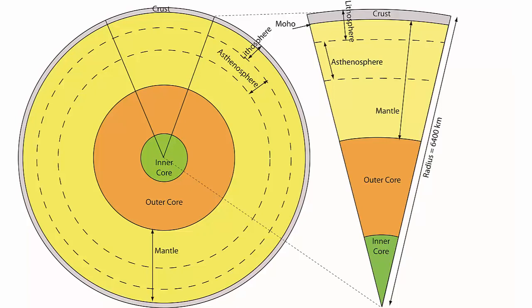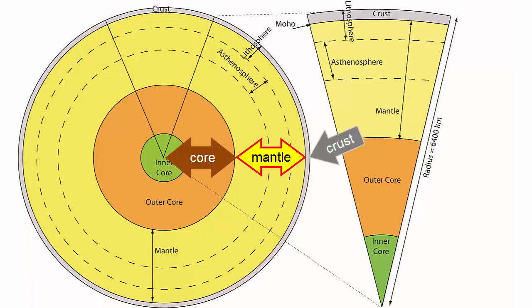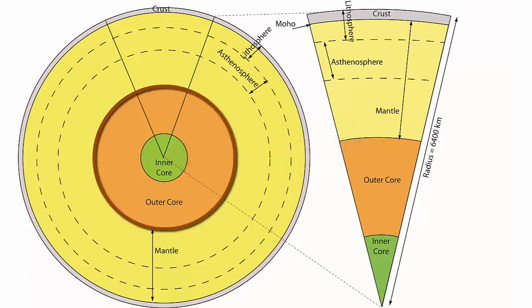Let's review the basics. First, due to density separation, the core, mantle, and crust — the primary compositional layers — were formed. Let's look closer at the core. It's made mostly of iron, and is separated into two physically distinct layers. They are compositionally quite similar, mostly made of iron.